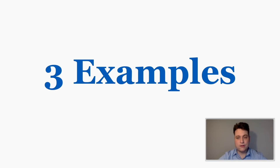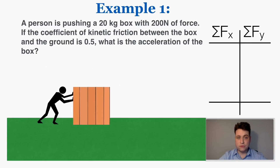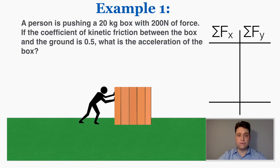Here are three examples of using Newton's second law — it seems simple but it can get a little complicated. A person is pushing a 20-kilogram box with 200 Newtons of force. If the coefficient of kinetic friction between the box and the ground is 0.5, what is the acceleration of the box?